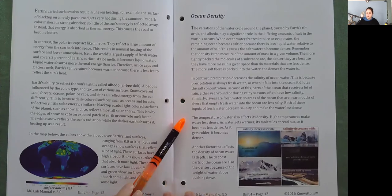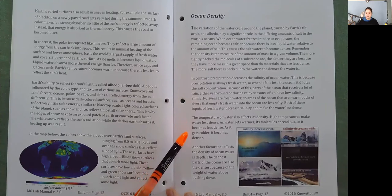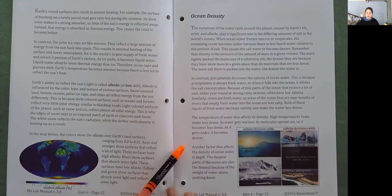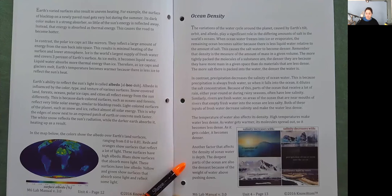The temperature of water also affects its density. High temperatures make water less dense — as water gets warmer, its molecules spread out. As it gets colder, it becomes denser. Another factor that affects the density of ocean water is depth. The deepest parts of the ocean are also the densest because of the weight of water above pushing down.